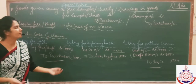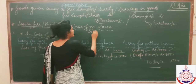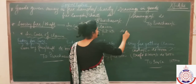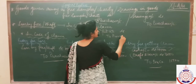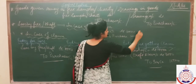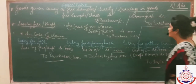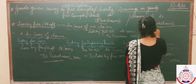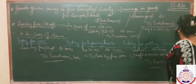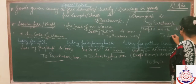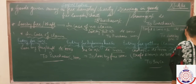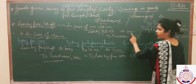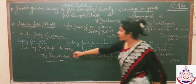Now suppose you have not got the goods insured at all. Then it is very easy — only one entry is passed: loss by fire account debited to purchases account for 10,000. Then the entire loss is transferred: profit and loss account debited to loss by fire account for 10,000.